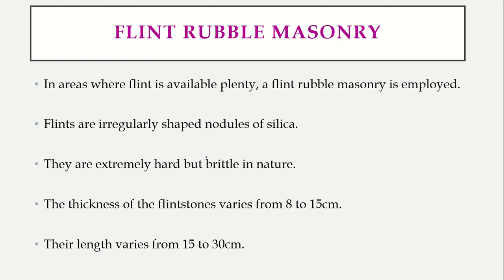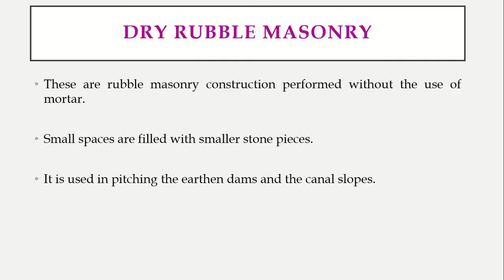Flint rubble masonry is used where flint stone is available. Flint stones are irregular-shaped small stones of silica — extremely hard but very brittle. They are found near seashores. The thickness of flint stone is around 8 to 15 centimeters and the length around 15 to 30 centimeters. The rubble masonry made especially with flint stone is called flint rubble masonry.